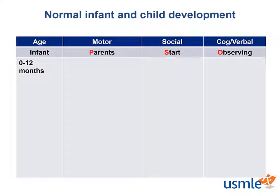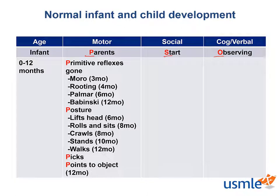First, we will be looking at the milestones for the infant up to age 12 months. When looking at the motor, social, and cognitive columns, you can use the mnemonic PARENTS START OBSERVING to help you remember the main milestones. Motor milestones in the infant age group include the child abandoning the primitive reflexes which they are innately born with. First up, we have the Moro reflex, which disappears by 3 months. The Moro reflex is seen when you pull an infant up slightly and then release them — they first spread their arms, then pull the arms in as if reaching out for something, usually accompanied by some crying.